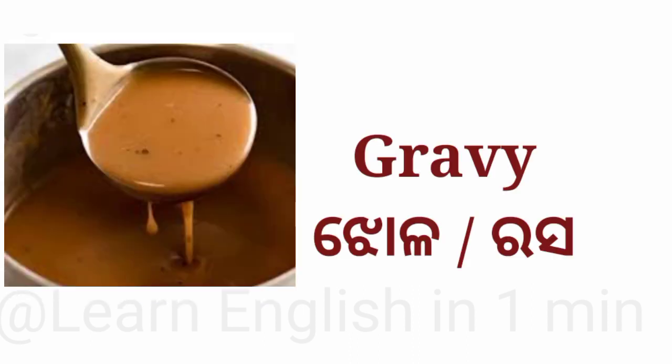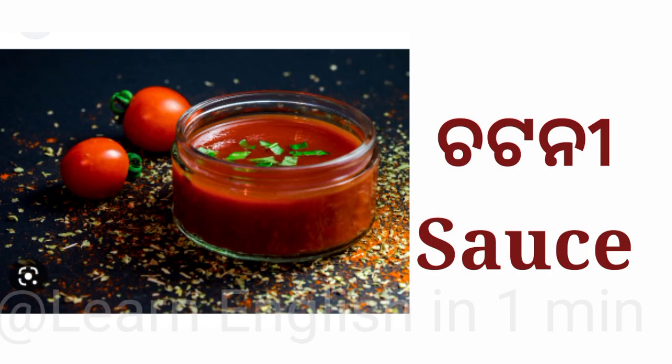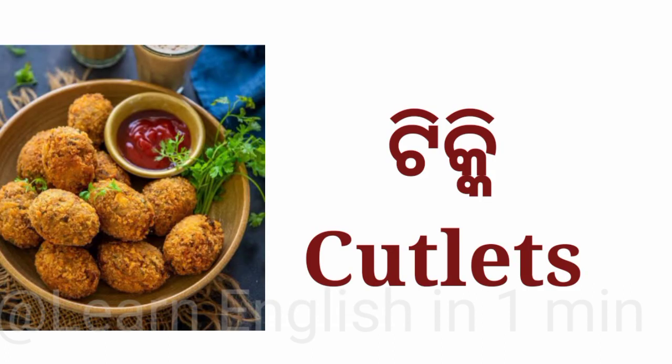Jhoľo or rosa — what is the English translation? Jhoľo or rosa means gravy. Chutney — what is the English translation? Chutney means sauce. Tiki — what is the English translation? Tiki means cutlets.